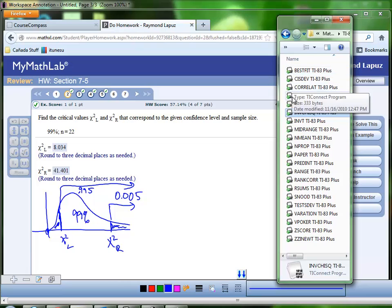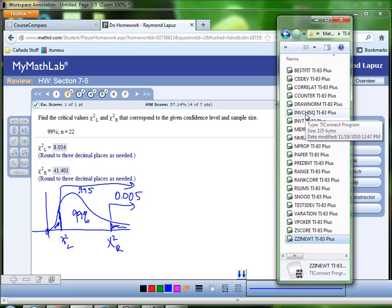The best thing to do is to make sure that you have all these programs installed because this particular program actually relies on ZZI Newt. And so if you don't have that installed, you're going to get an error message. You can pick and choose a handful of these programs to put on your calculator, but it's better to really just dump everything onto your calculator.